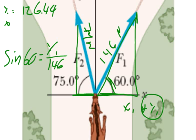Then X1, let's do that again, X1 is going to be our cosine function, it's our adjacent over hypotenuse. So, cosine of 60 degrees equals X1 over 146. You work that out algebraically. And X1 equals 73 newtons. So, those are newtons. So, Y1 and X1 are 126.44 and 73.